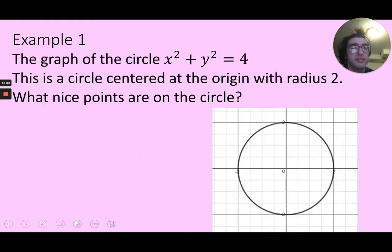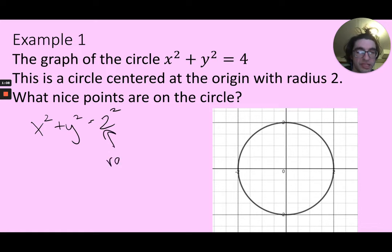So if I look at x squared plus y squared equals 4 squared, I can really think of that as x squared plus y squared equals 2 squared. So that's why the radius is 2.